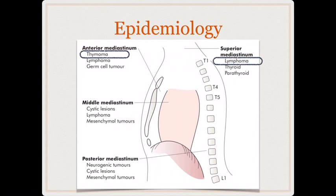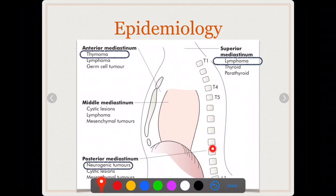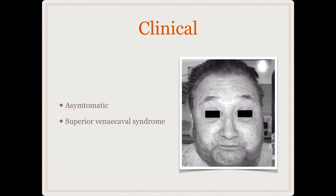The superior mediastinum contains lymph nodes and occasionally a retrosternal thyroid, and the commonest tumor of the superior mediastinum is a lymphoma. In the posterior mediastinum, nerve roots emerge from the intervertebral foramina and can develop neurogenic tumors like neurofibroma — that is the commonest tumor of the posterior mediastinum. In the middle mediastinum, which contains the heart and pericardium, tumors are very rare; rarely you can get atrial myxomas.